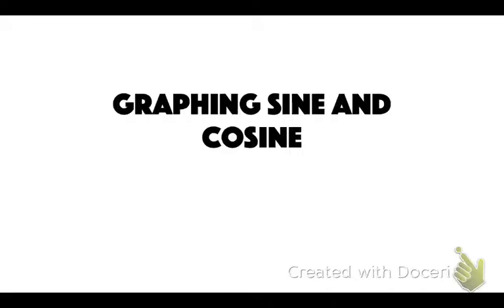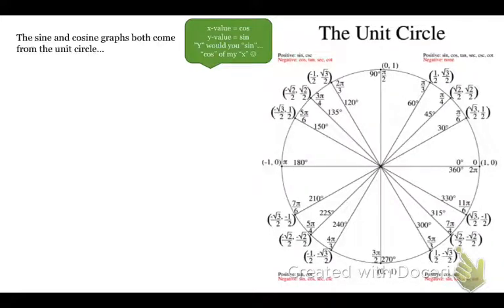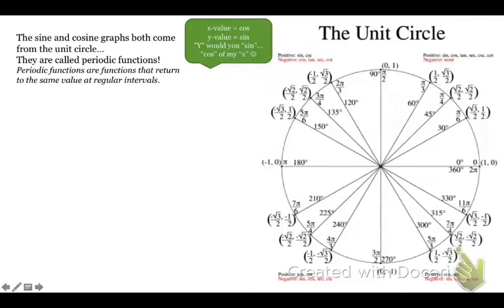Alright, so graphing sine and cosine. We're going to look at the unit circle because both of these graphs come from the unit circle. They're called periodic functions. A periodic function is a function that returns to the same value at regular intervals.